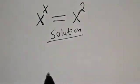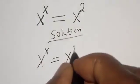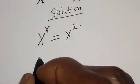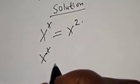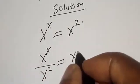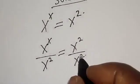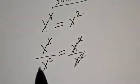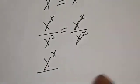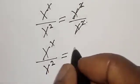We have the given equation: s raised to power s is equal to s squared. Now let's divide both sides by s squared. We have s raised to power s divided by s squared is equal to s squared divided by s squared. This will cancel, and we have the left hand side become s raised to power s divided by s squared, which is equal to one.